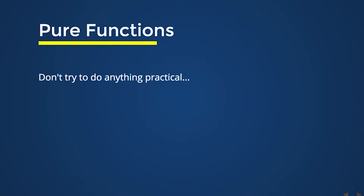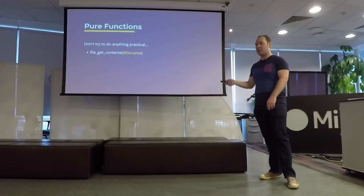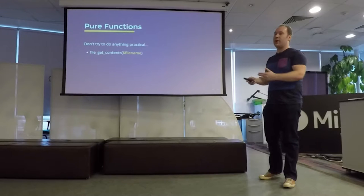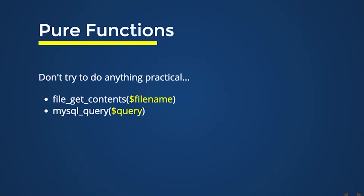But there are some restrictions — you can't do anything practical. Imagine, for example, file_get_contents: you give it a file name argument, but there is context there — the context is the contents of the file you're trying to access. So even though you could ask to get the contents of foo.txt twice, you can't make any guarantees that the function is going to return the same value both times, because the file itself could have changed. And the same idea applies to talking to a database or any kind of I/O — you're talking to the rest of the world, and the world is beyond the control of that function. Even simple things like time and generating random numbers are going to return different things every time you call them.